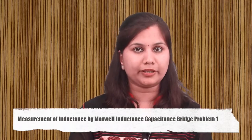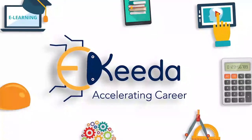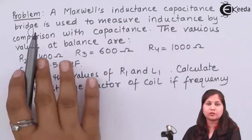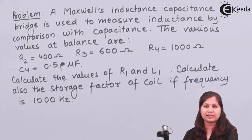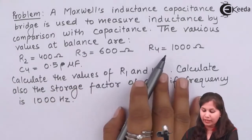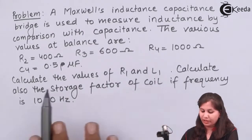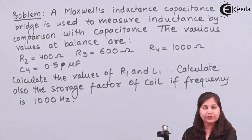Hello friends. In this video we will solve a problem on the measurement of inductance using the Maxwell inductance capacitance bridge. Our problem is: we are given a Maxwell inductance capacitance bridge which is used for the measurement of inductance by comparing it with the value of a capacitance. When the bridge is balanced, we are given the values of resistances R2, R3, R4, and capacitance C4. We have to calculate R1, L1, and the storage factor of the coil if the frequency is 1000 Hz.